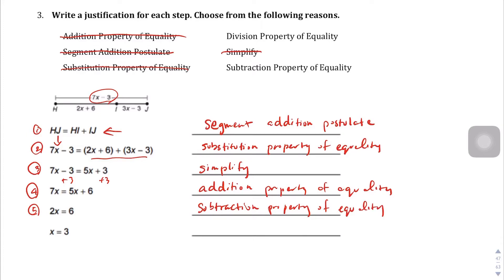And then lastly, we divided both sides by 2. So this is the division property of equality.